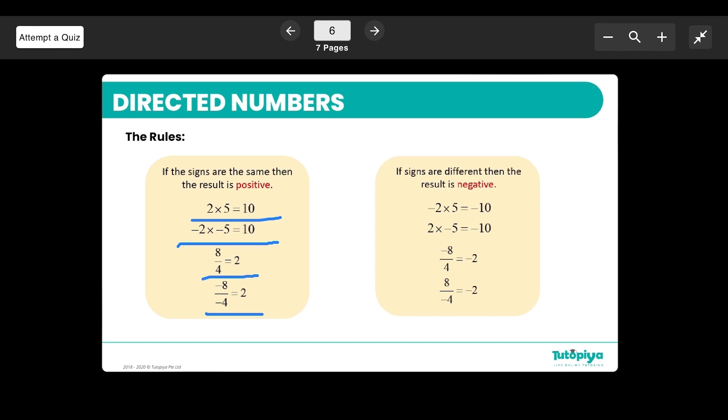If the signs are different, so one number is positive and the other is negative, then the answer is always negative. In this case, because the 2 is negative, the answer is negative 10. In the next case, the 5 is negative, still negative 10. When dividing, because the 8 is negative, the answer is negative 2. So if the signs are the same, the answer is positive. If the signs are different, the answer is negative.